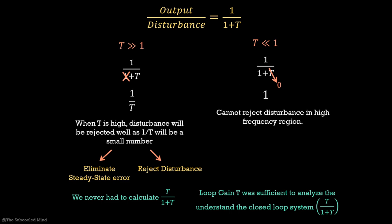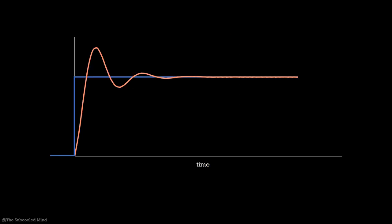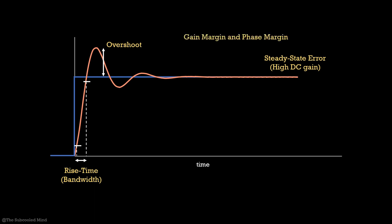Let us summarize what we learned. We want the output to follow the reference step input and the bandwidth determines how fast the output will rise. Then the system might overshoot and at the end it might have some steady state error. Also, we saw how to quantify stability using gain margin and phase margin. Finally, we saw that a system might not satisfy all these requirements and hence we need to shape the loop gain using controllers.